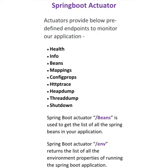Actuator provides below predefined endpoints to monitor our application, like health, info, beans, mappings, config properties, httptrace, heap dump, thread dump, etc. The Actuator endpoint /beans will provide a list of all the Spring beans in the application. Similarly, the Actuator endpoint /env will return a list of all the environment properties.